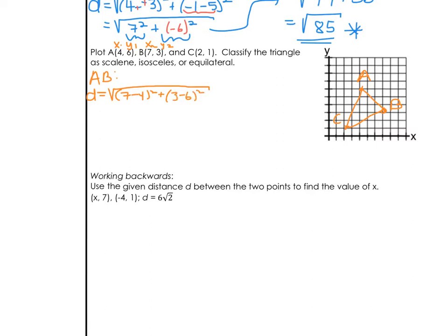Now we need to simplify. 7 minus 4 is 3. 3 minus 6 is negative 3. Get that negative in there. But remember, when we square a number, we're always going to get a positive result. 3 squared is 9, and another 3 squared is 9. 9 plus 9 is 18.